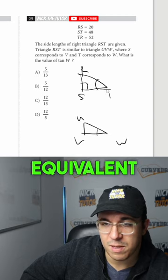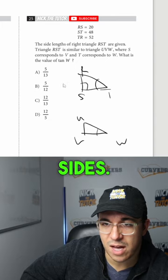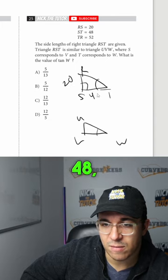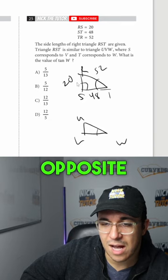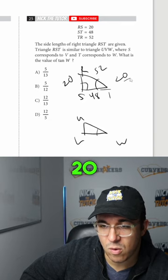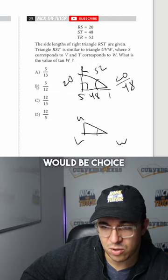Tan of W would be equivalent to tan of T. Now we've got to label the sides. RS is 20, ST is 48, and this is 52. Tan is opposite over adjacent, so it's going to be 20 over 48. That would be choice B.